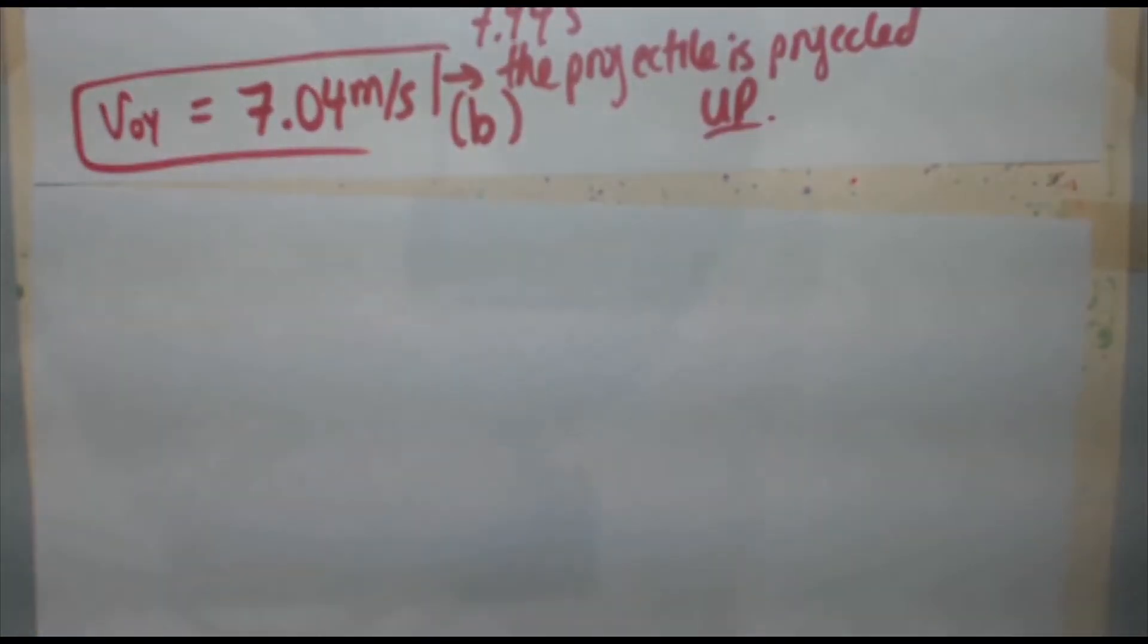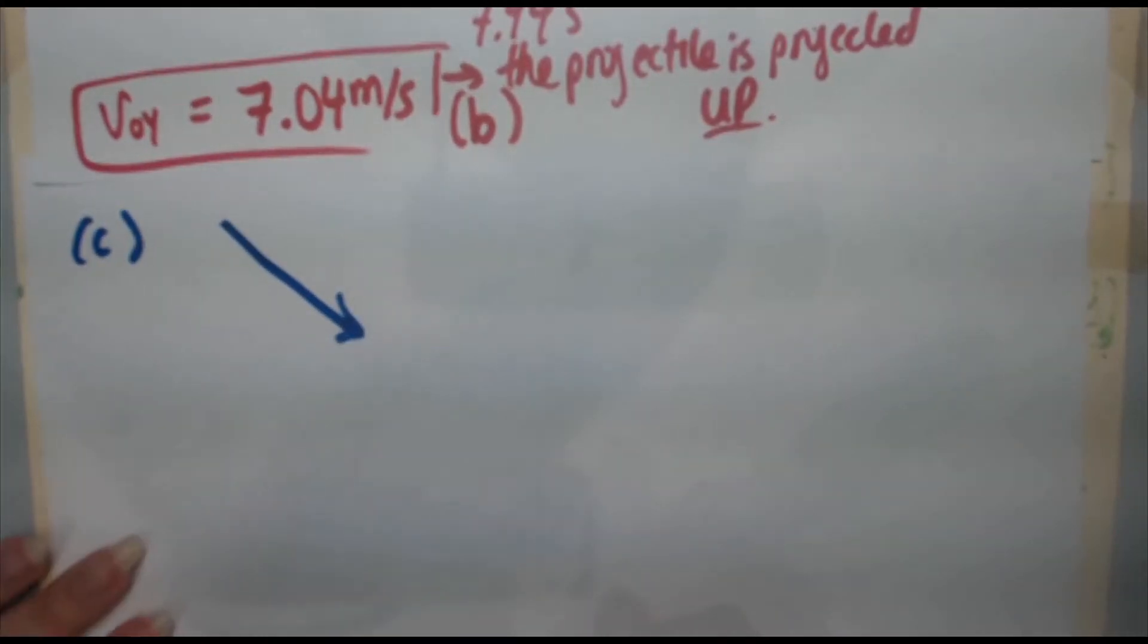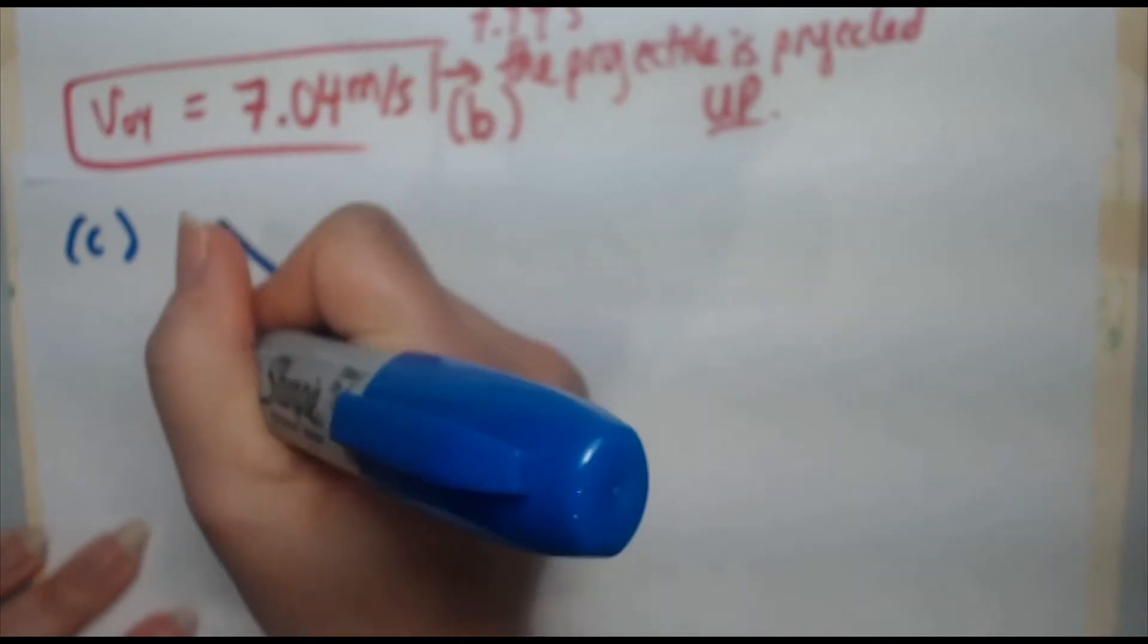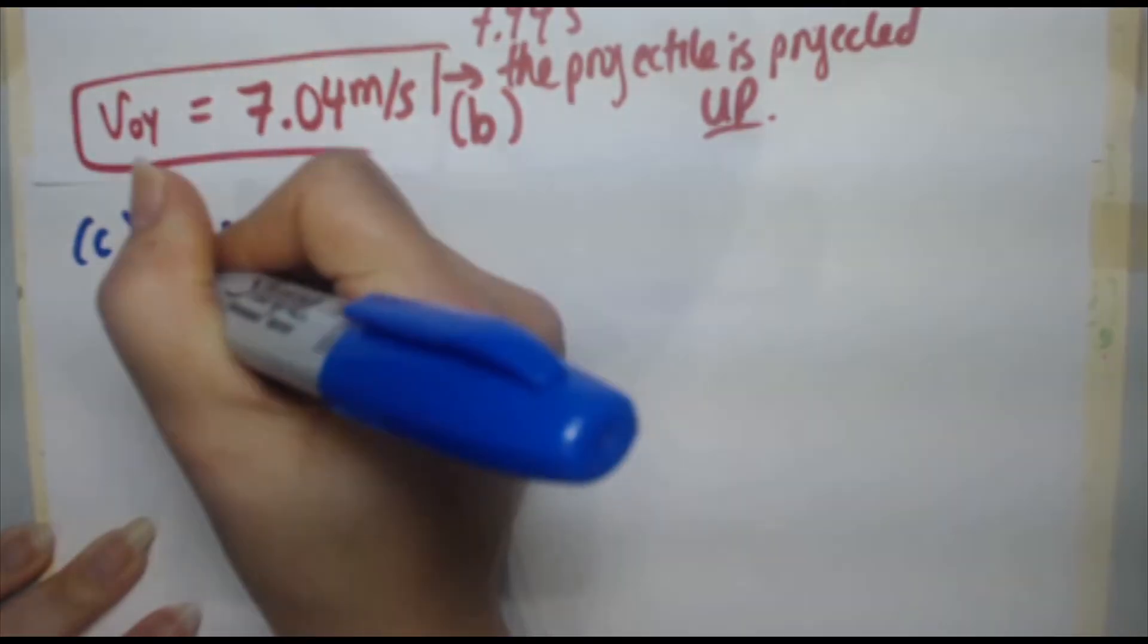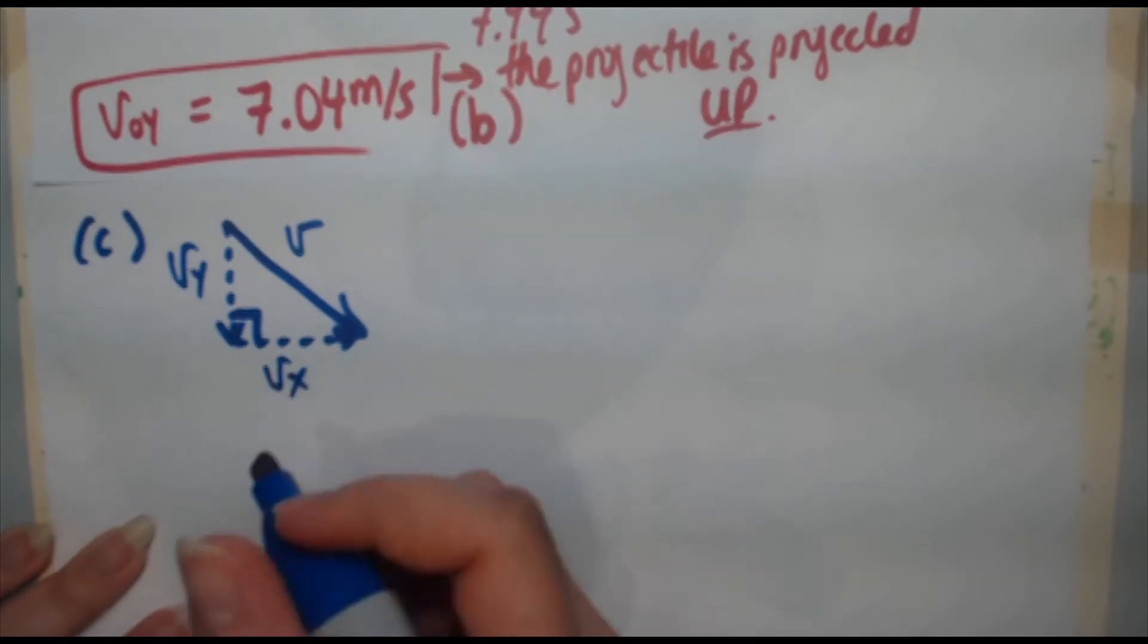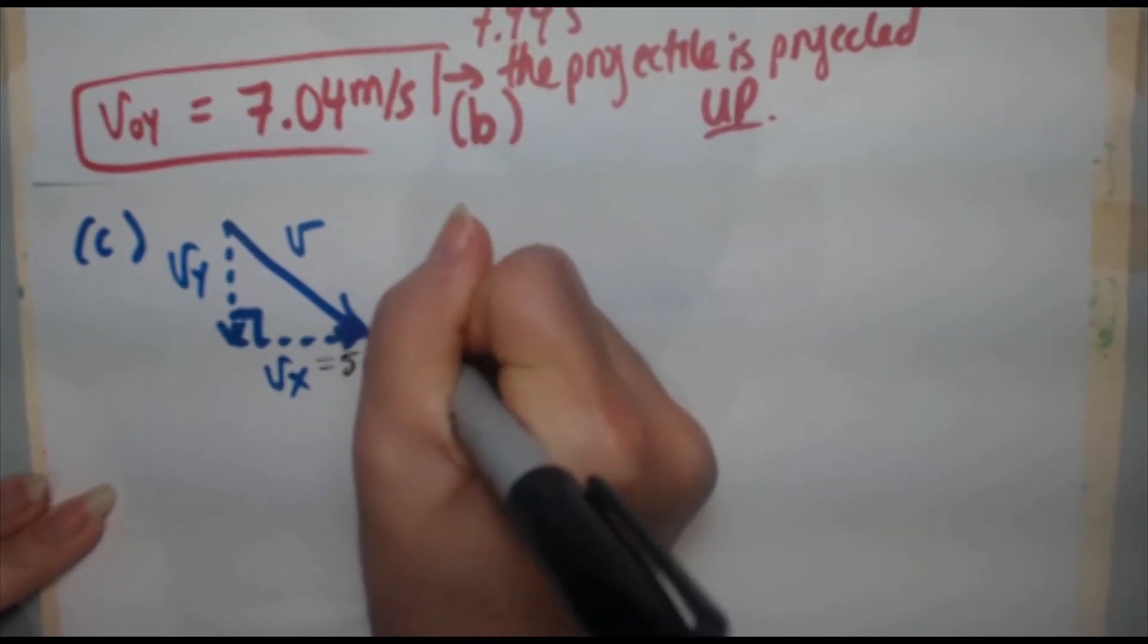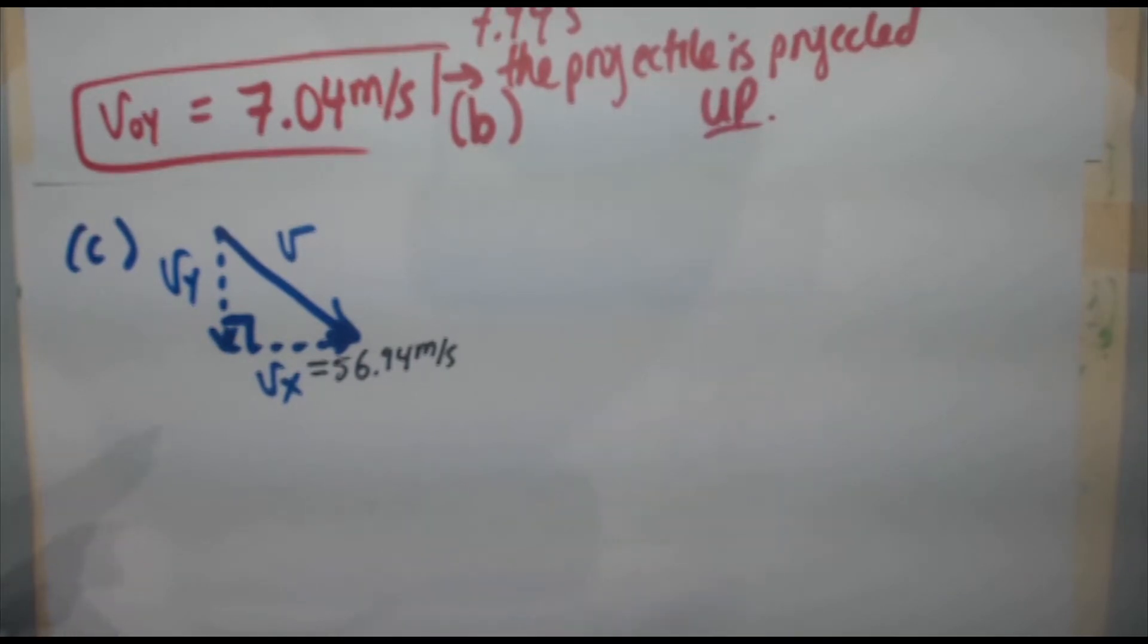So that's what we're going to do for part C. For part C, the final speed's going to be down because it's falling towards the mountain climbers, which means the Y component of the speed is going to be negative, the X component's positive. Those two meet at a nice 90 degree angle. So we've got our V here, we've got our VY, and we've got our VX. Again, the VX doesn't change, so that's simply going to be 56.94 meters per second.